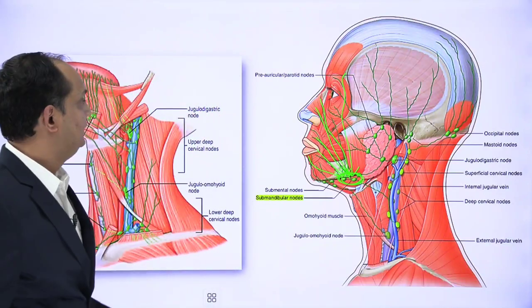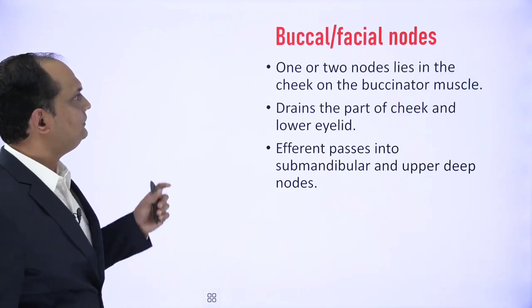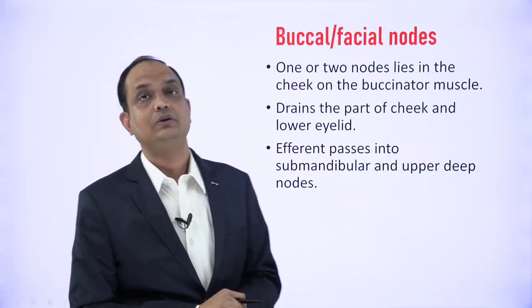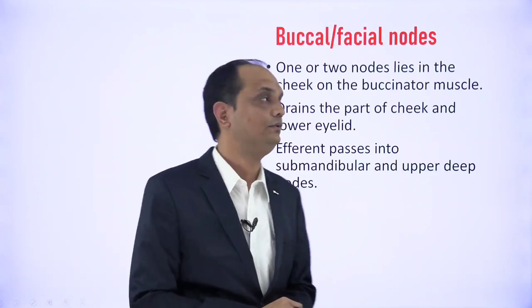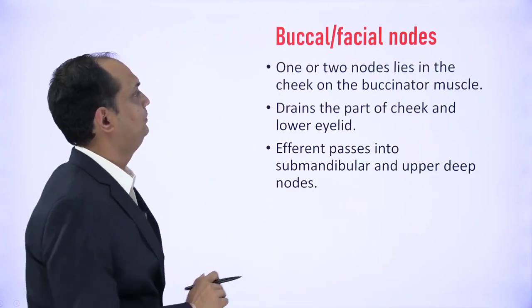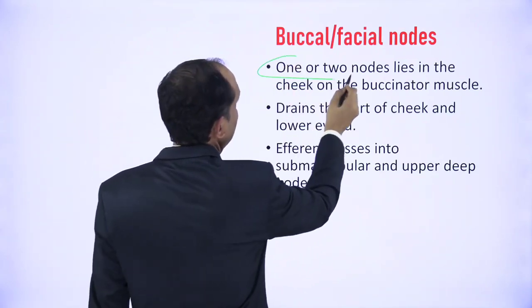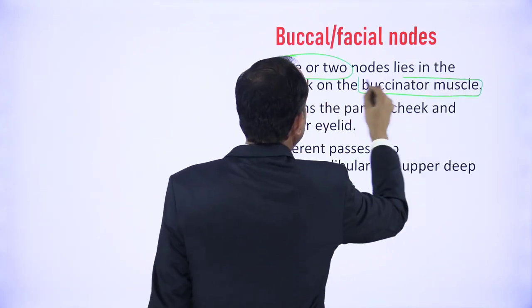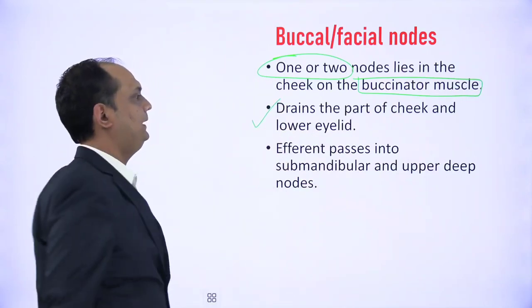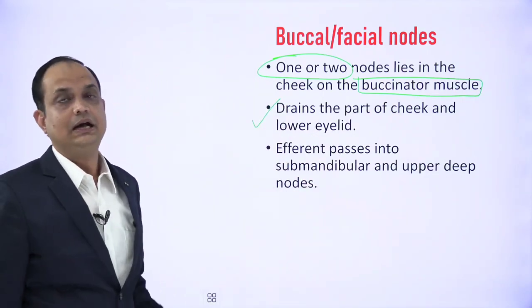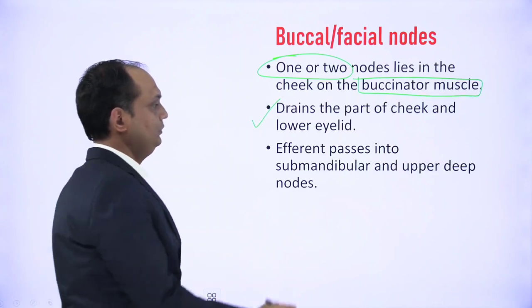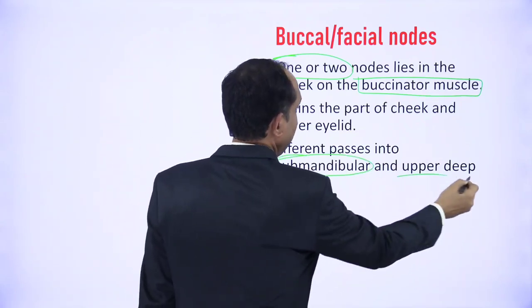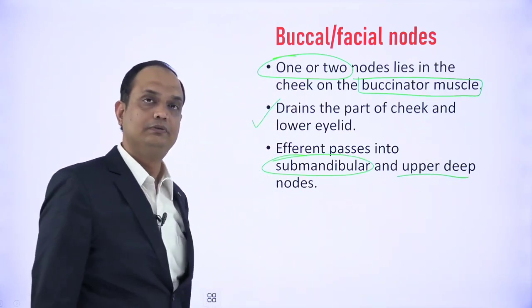The buccal group, also known as the facial group of lymph nodes, has only one or two lymph nodes. They lie on the buccinator muscle and drain the adjacent part of the cheek and lower eyelid. Ultimately the lymph from this group drains into the submandibular and then into the deep group of lymph nodes.